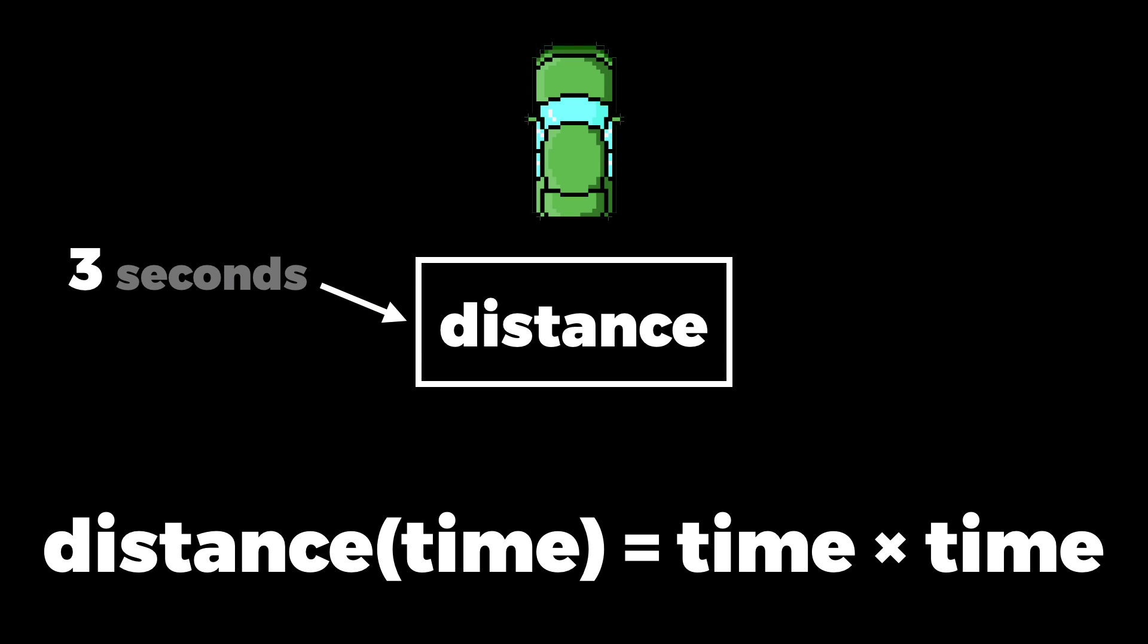So rather than just putting a time into our distance function and getting a distance out, we should put in a time and a rate of change, for example we specify that time is changing at 1 second per second, and get out a distance and a rate of change, for example we get the result that the distance is changing at 6 metres per second. One way of doing this is to invent a new kind of number that can represent a value and its rate of change all at once, and then make our implementations of functions work with these new numbers.